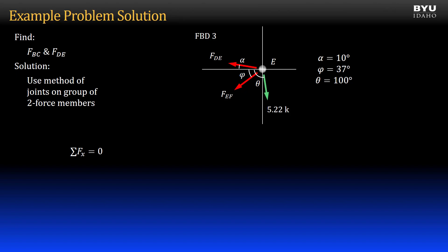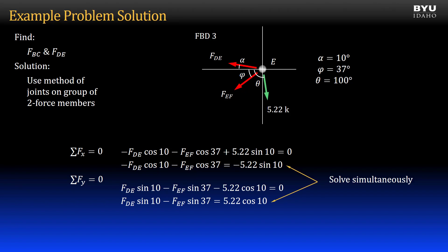Summing forces in the X direction, I get an equation with both unknowns. Summing forces in the Y direction, I get another equation with the same two unknowns. By solving the two equations simultaneously, I get that the force in hydraulic RAM DE is 6.36 kips in tension. And now I have my second answer. The force in member EF is negative 6.71 kips or 6.71 kips in compression.